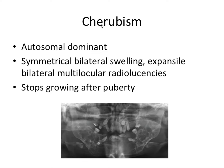Next we have cherubism, which is an autosomal dominant inherited disease. More importantly, you should associate cherubism with these multinucleated giant cells, because there will be board questions that test exactly that fact. Clinically, you'll see a symmetrical bilateral swelling, and radiographically, super expansile bilateral multilocular radiolucencies — unlike anything we've seen so far. It stops growing after puberty.